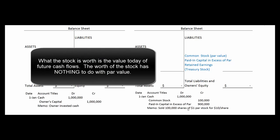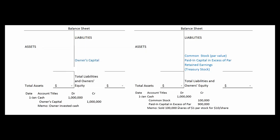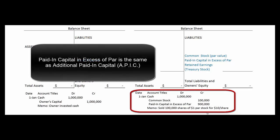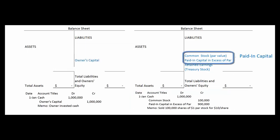Say a company sets its stock par value at one dollar and sells those same 100,000 shares. It still receives a million dollars, but because the state requires a par value, the credit must be split into two parts. The par value portion goes into the account called common stock, and anything in excess of par goes into paid in capital in excess of par, also called additional paid in capital. The total of par value plus paid in capital in excess of par is called paid in capital — what the shareholders paid in, just like the sole proprietor paid in a million dollars.